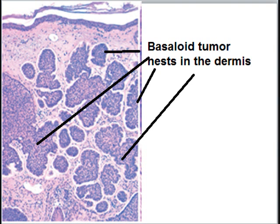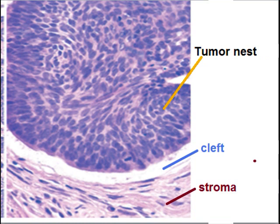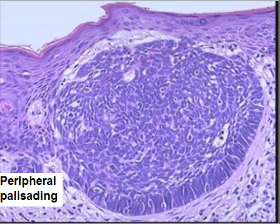The tumor cells are dark in color with a high nuclear-to-cytoplasmic ratio. You can appreciate peripheral palisading and stromal clefts. Here is the tumor nest — it is separated from the stroma by a clear cleft area. The cells exhibit peripheral palisading: the tumor cells at the periphery of the nest are parallel to each other. This parallel alignment of tumor cells is called peripheral palisading.